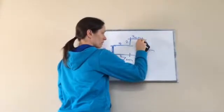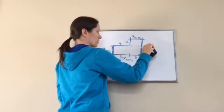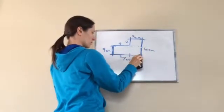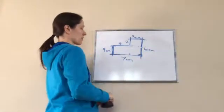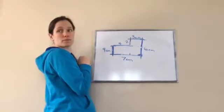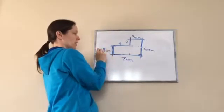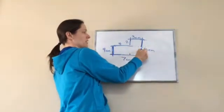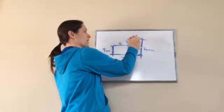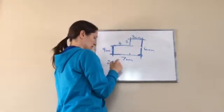All right, good job. Now if I were to find the perimeter of this figure, now I'm going to erase all our extras. I have a four, a seven, a six, a three, a two, a four. So if I added that up, seven and four is 11, plus six is 17, 18, 19, 20, 21, 22, 23, 24, 25, 26 centimeters would be my perimeter for that figure.